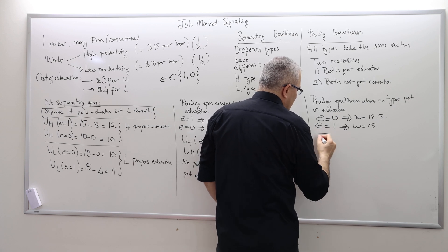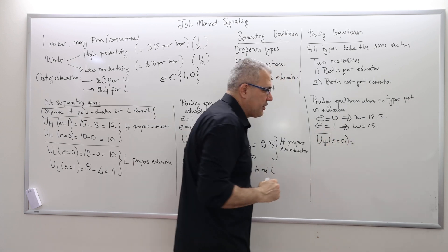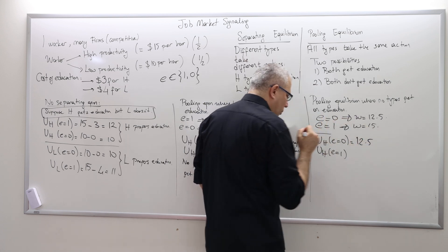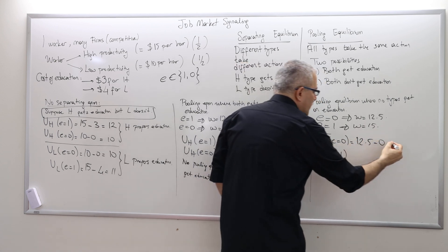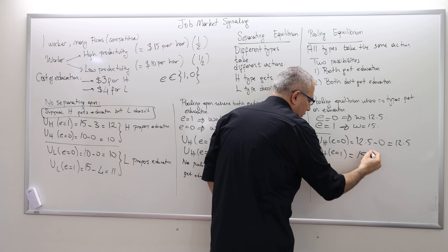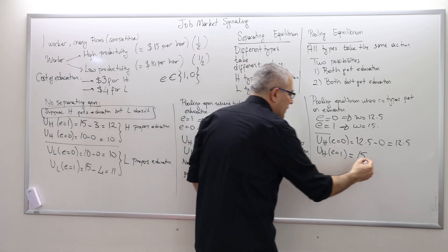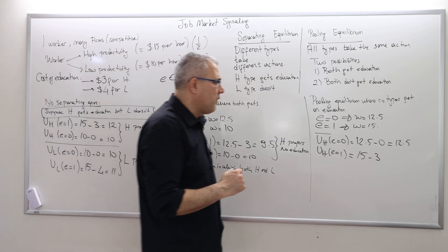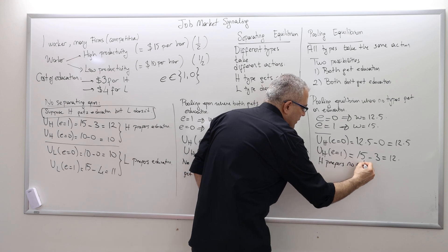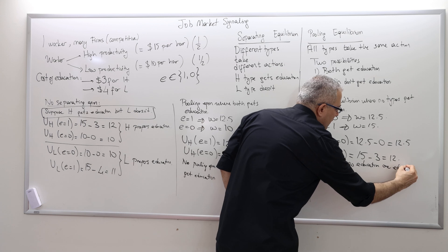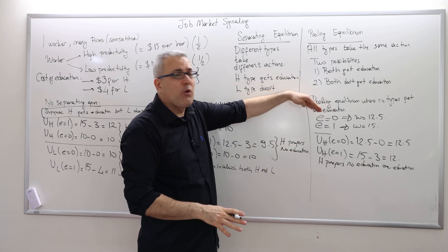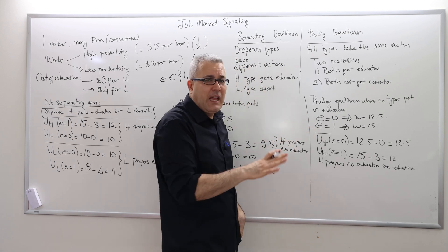So let's check if the high type prefers no education over education. If the high type doesn't get an education, he's paid $12.5 with no cost — net utility $12.5. If he does get an education, companies think he's the high type and pay $15, but he suffers a cost of $3, giving $12. So the high type prefers no education over education, and will not regret his choice.